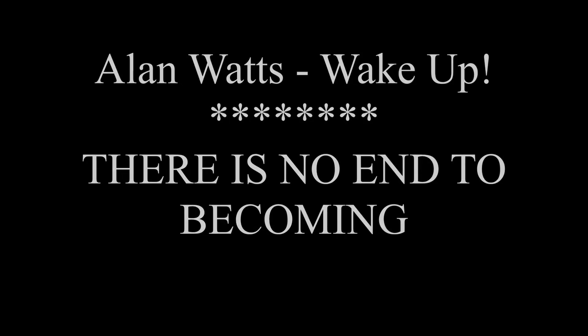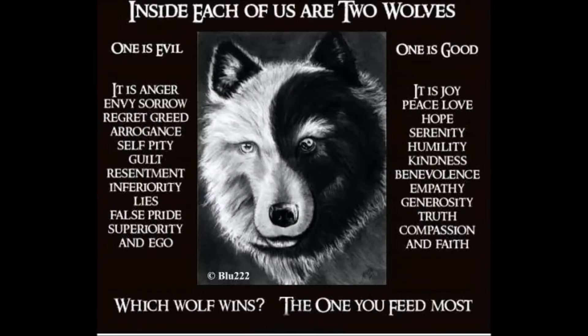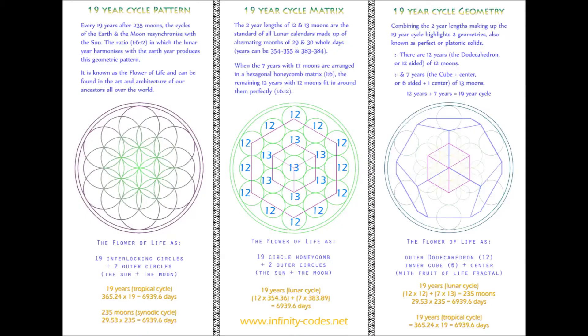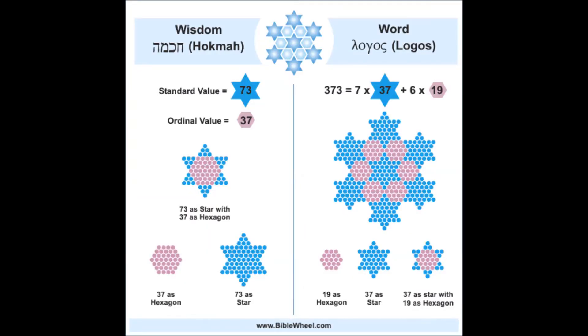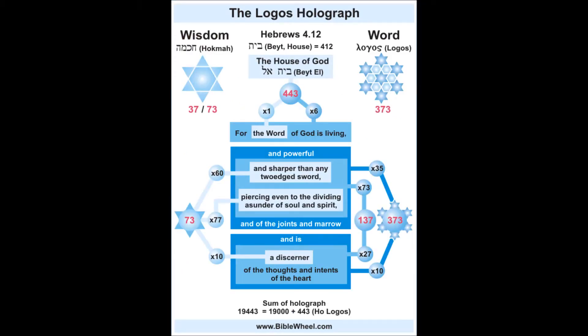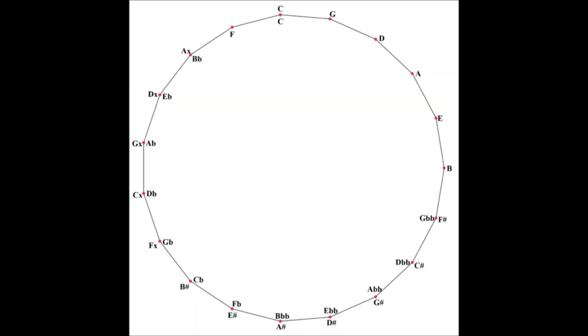It has always been a puzzle for Buddhist philosophers to explain how they can at once believe in reincarnation and at the same time deny the existence of an individual spook which is independent of the physical frame. The most subtle discussions in all Buddhist literature range around this puzzle. How can there be a continuing process without anything carried along by it? And you will recognize at once that the problem is very largely semantic.